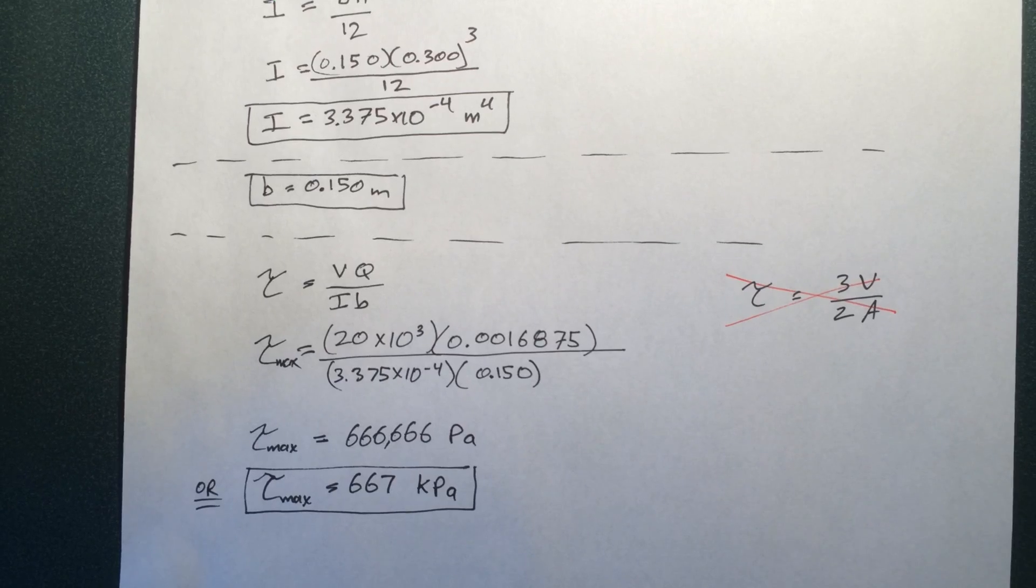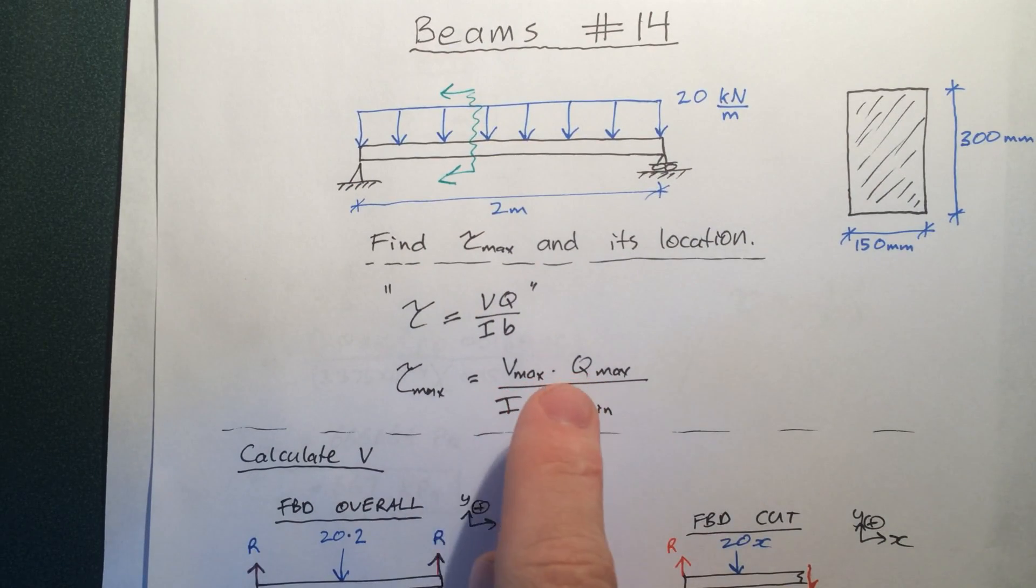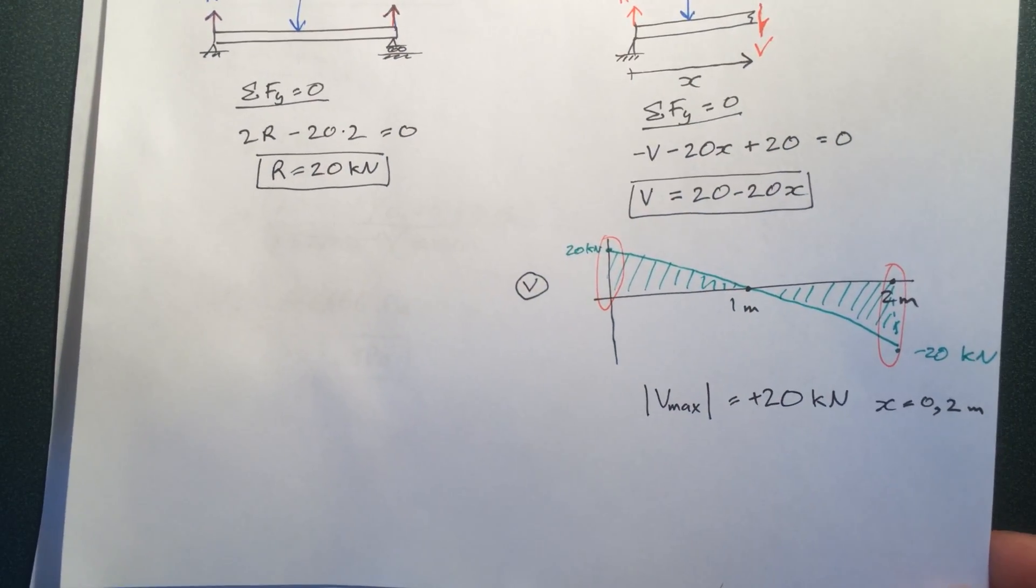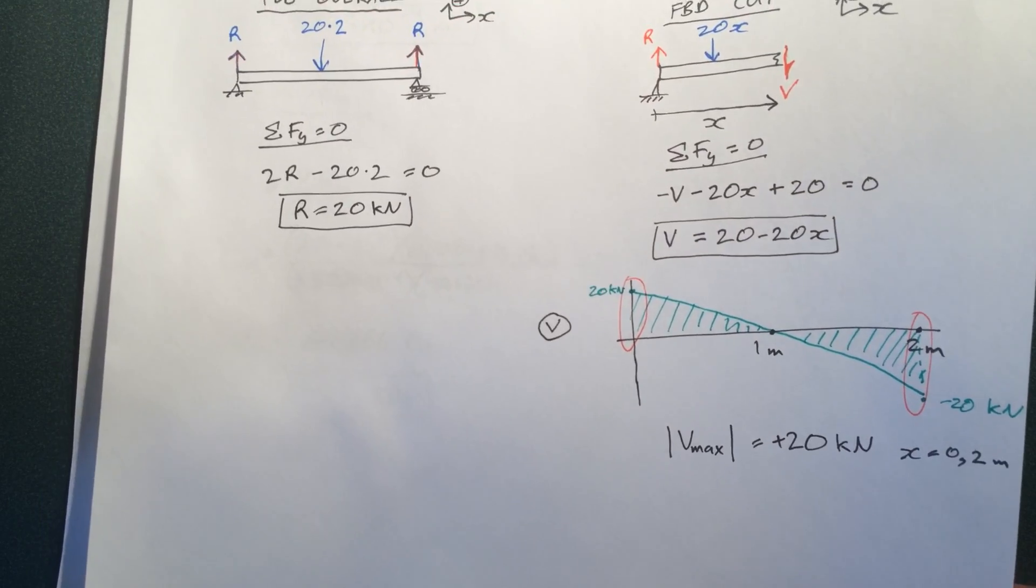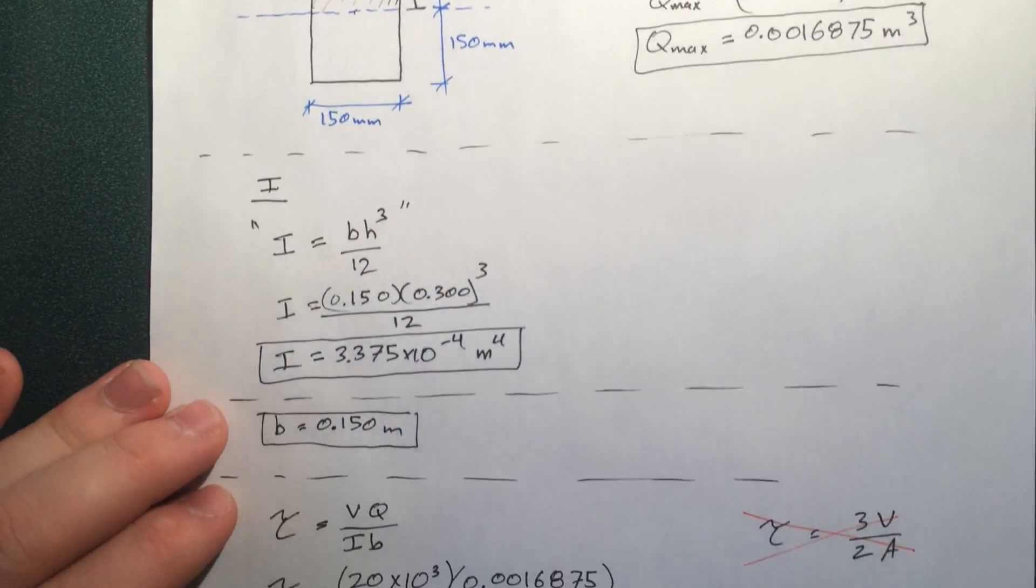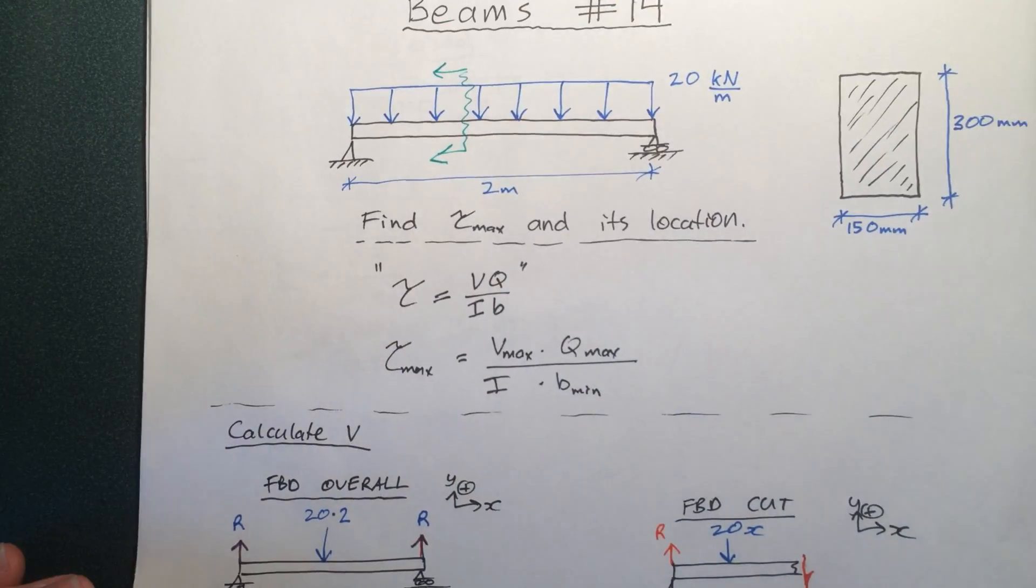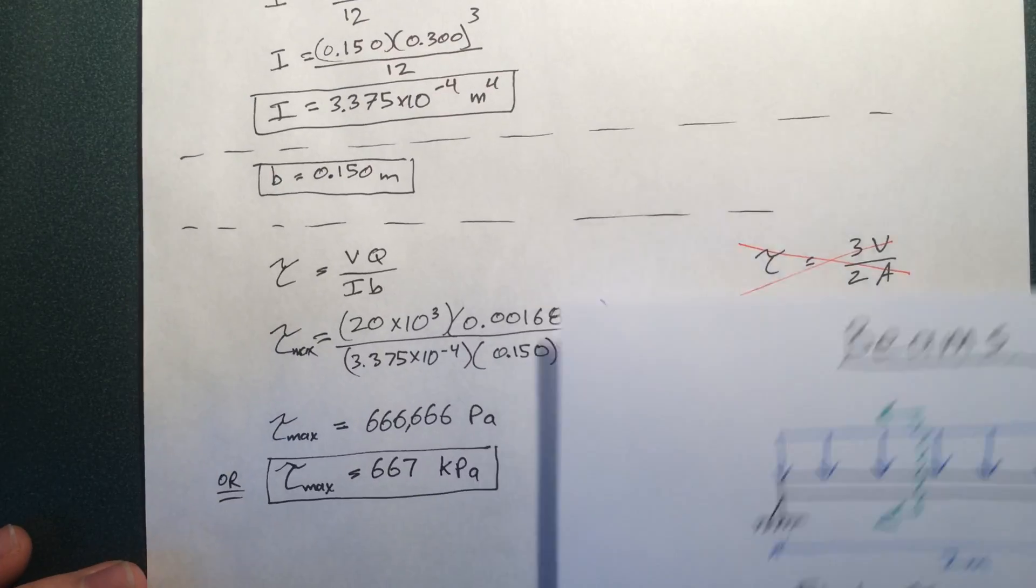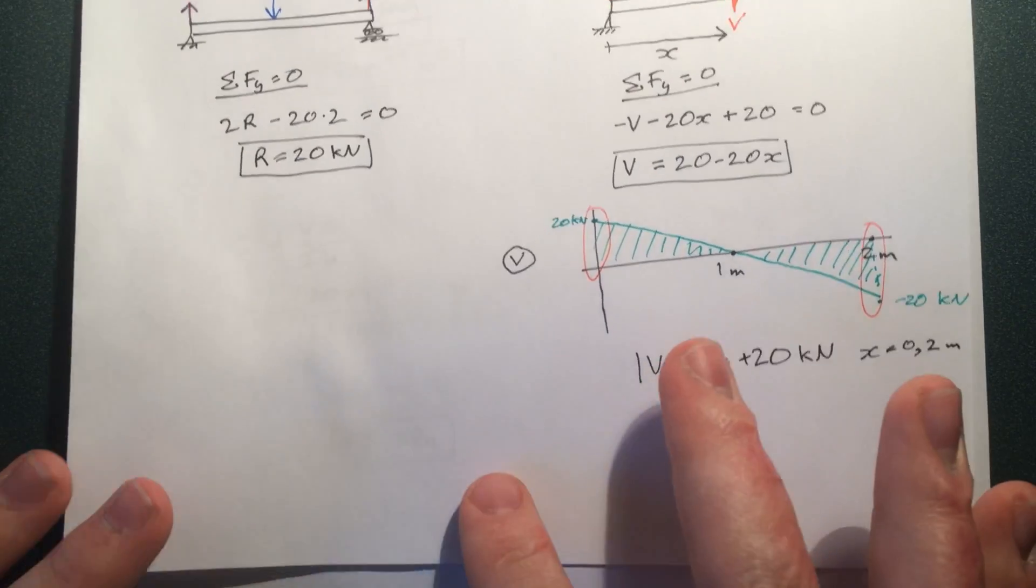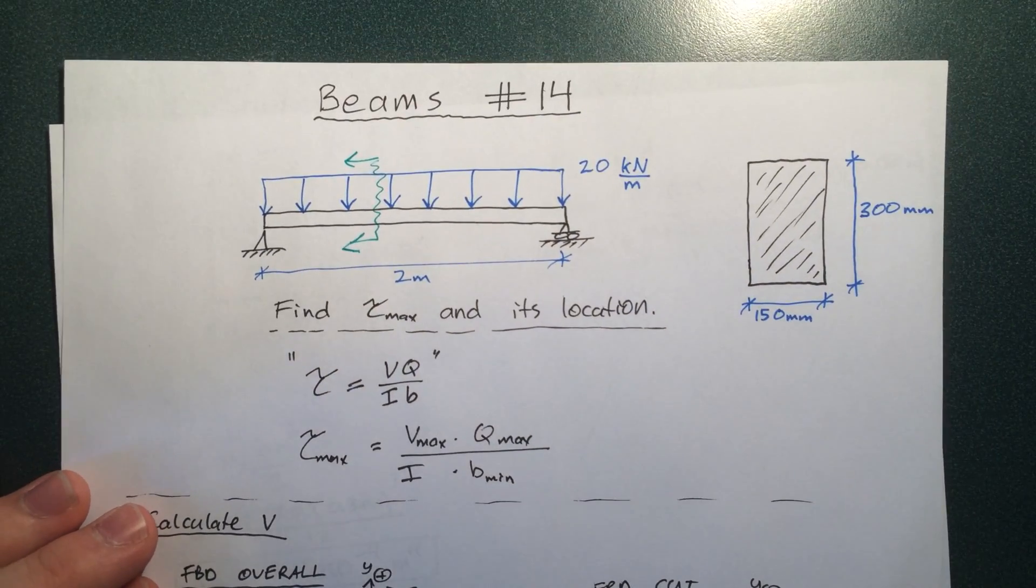So a quick review of what we did here. Find the shear stress max. We realized we had to maximize these two variables and minimize this one. Went through, we found V. We plotted it to find the location and magnitude of the V max. And then we went through, solved for Q, I, and plugged in and got the value. And, of course, we're asked to find tau max and its location. So we found tau max, and its location is going to be at x equals 0 and 2. So I hope you enjoyed this video. I hope it helps you out. And I'll see you in my next beam video. Thank you.